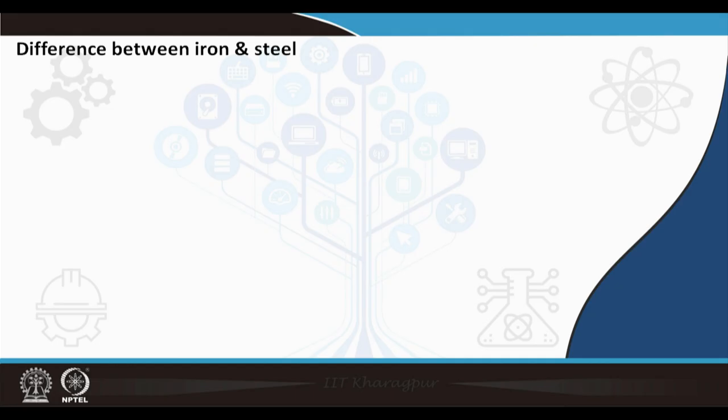First let us differentiate between iron and steel. Basically, iron and steel are both alloys of carbon in iron. So both iron and steel are alloys of carbon in iron.